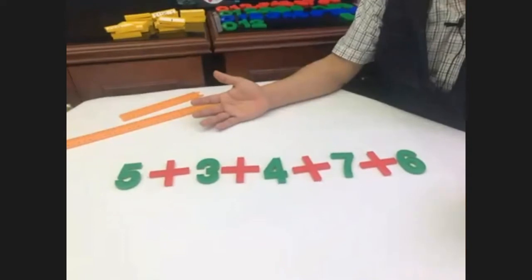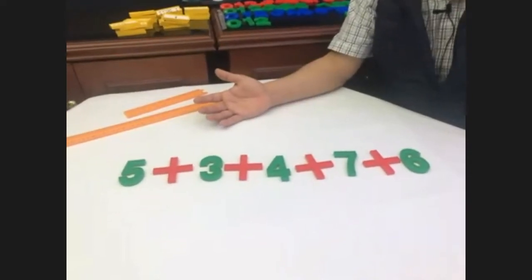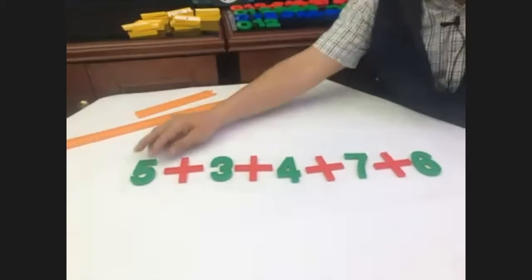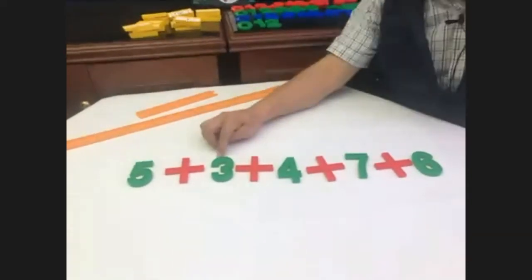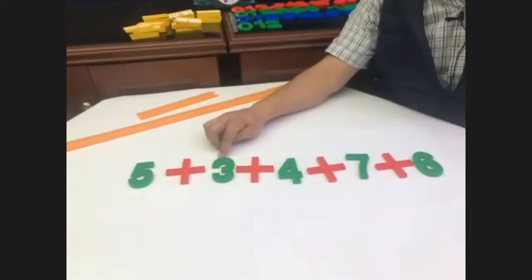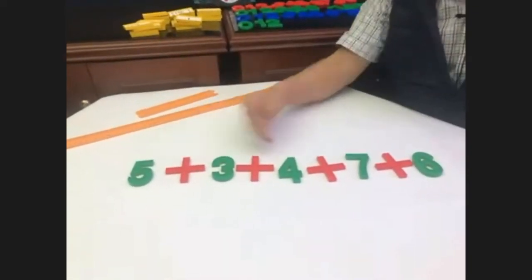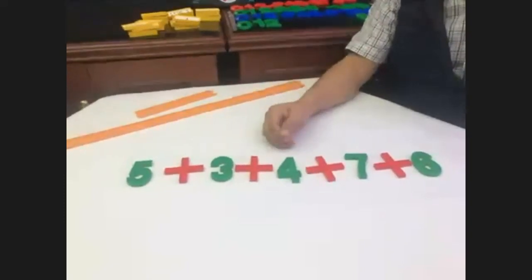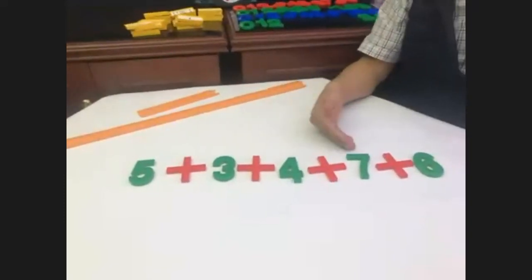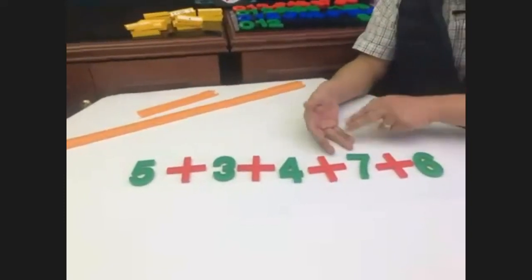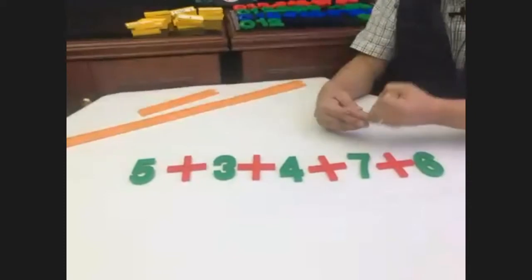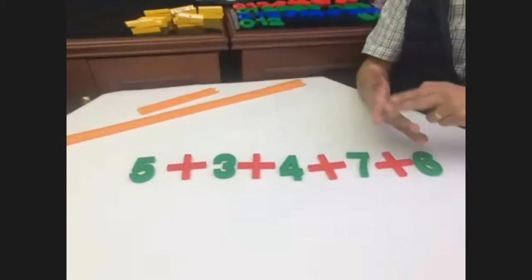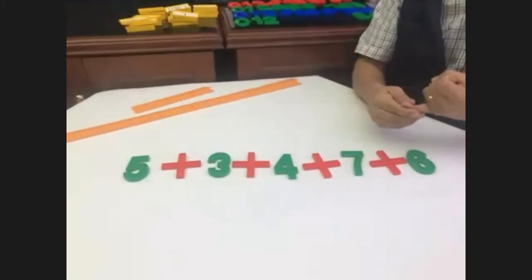Pónganse a reflexionar: ¿qué estrategia usaron? ¿Usaron el de 5 más 3 son 8, más 4 son 12, más 7 son 19, más 6 son 25? ¿Utilizaron eso o algún otro?